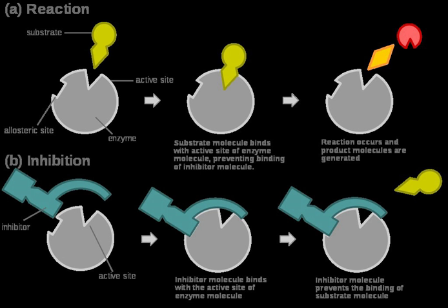Another example involves prostaglandins, which are made in large amounts as a response to pain and can cause inflammation. Essential fatty acids form the prostaglandins, and when this was discovered, it turned out that these were actually very good inhibitors to prostaglandins. These fatty acid inhibitors have been used as drugs to relieve pain because they can act as the substrate, bind to the enzyme, and block prostaglandins.